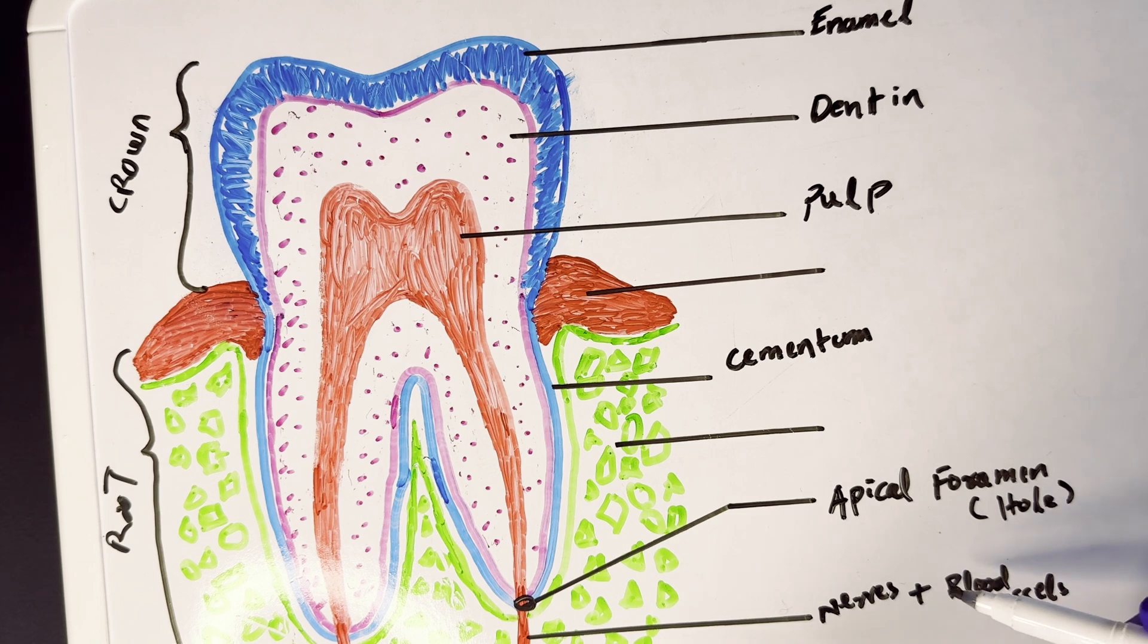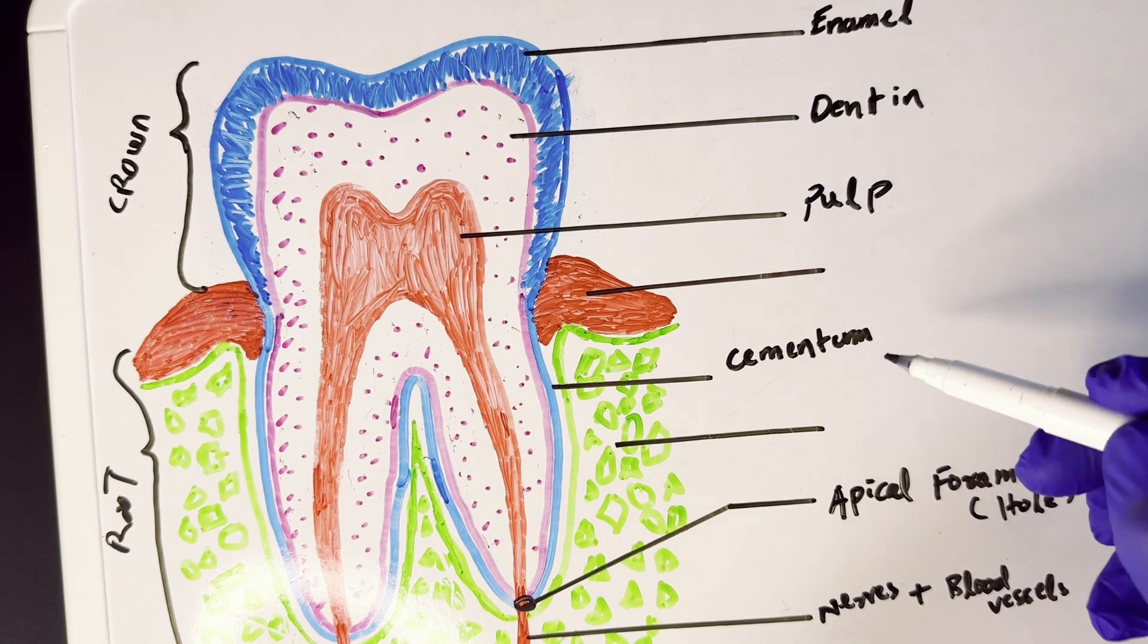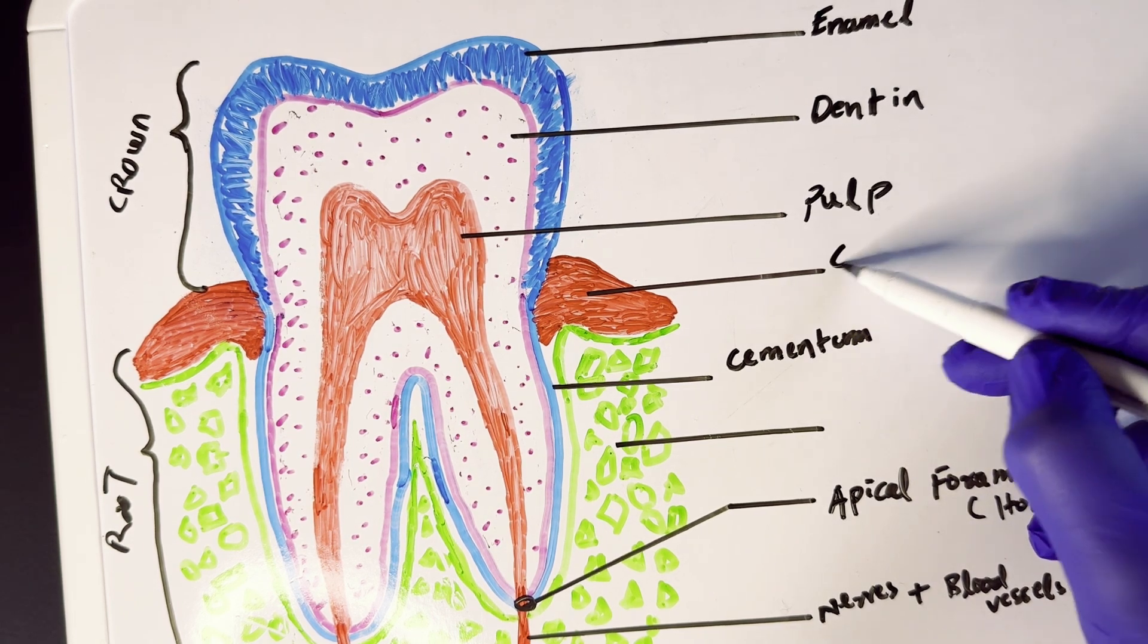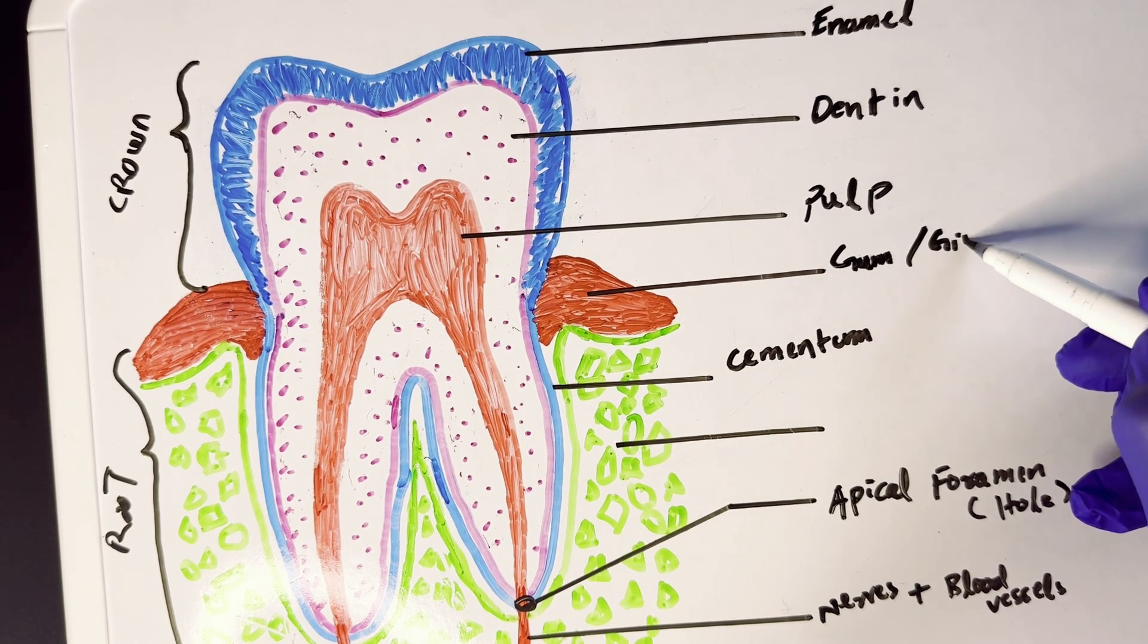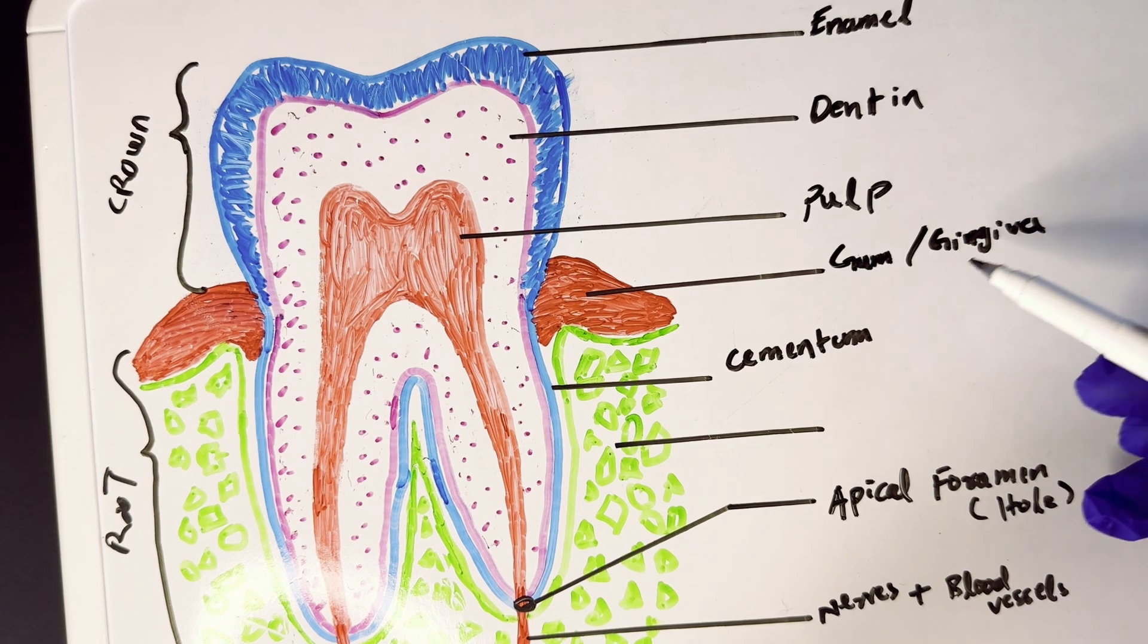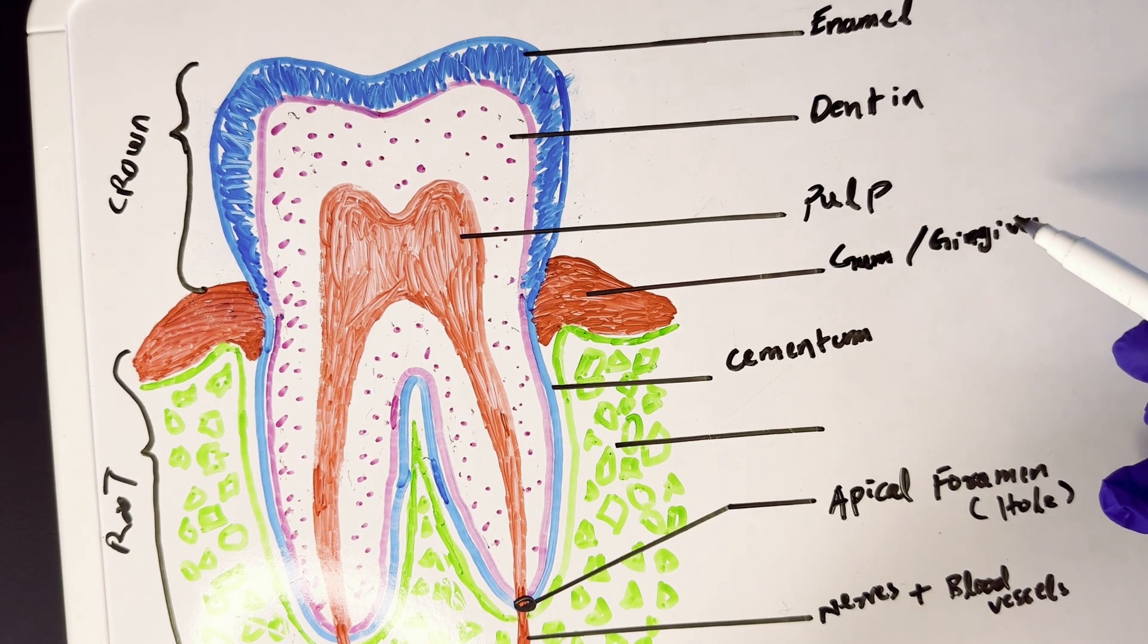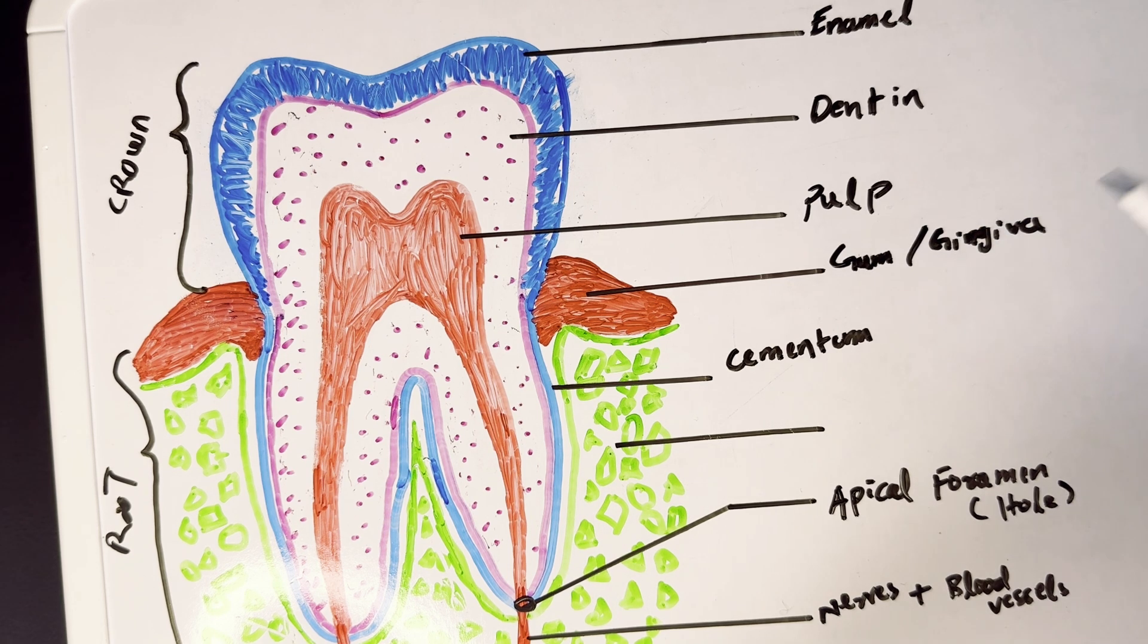And moving on to this red structure here, that just indicates the gum from the side. In other words, in scientific words we call it gingiva. That's why you must have heard terms like gingivitis that simply means that your gum is inflamed, but that stems from the word gingiva.